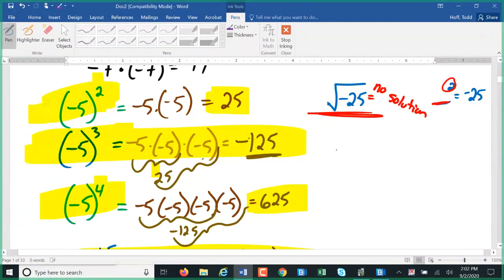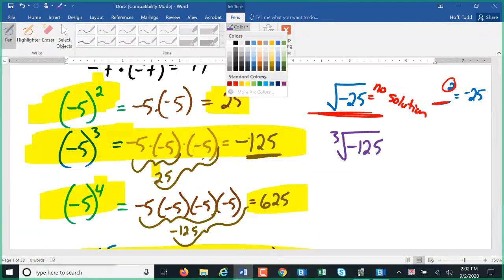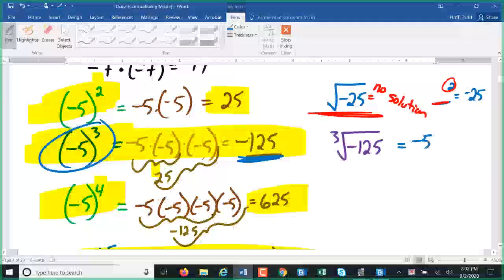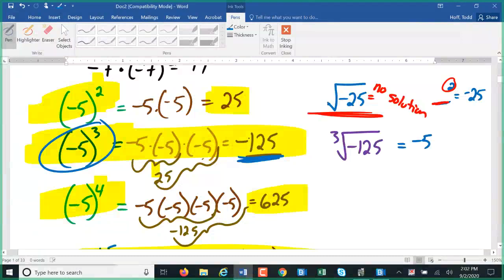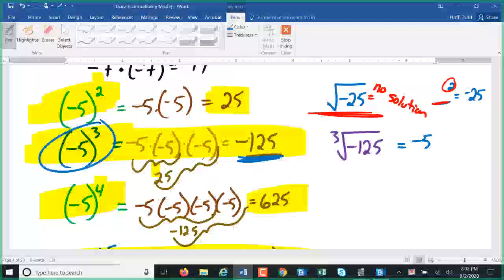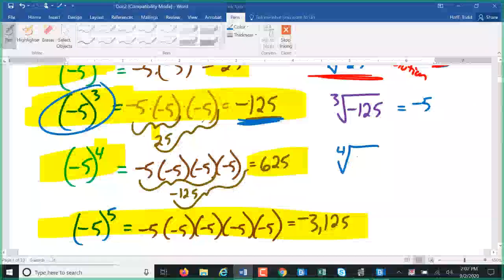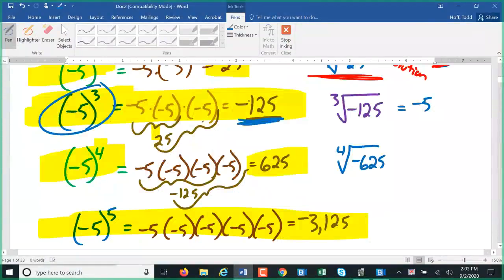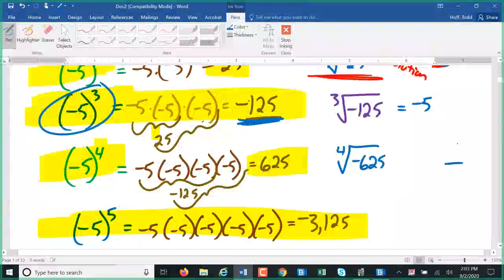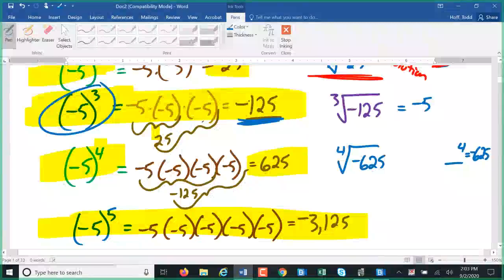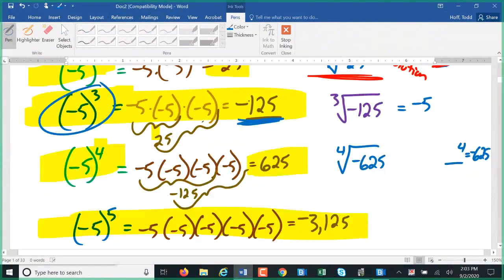So we might have the third root of a negative 125. Well, we just saw here that negative 5 to the third power is a negative 125. So that just very simply becomes negative 5. That's the definition of that third root is reversing the third power. If I want to do a fourth root of a negative 625, well, again, that's asking what number to the fourth power equals a negative 625. Well, the 4 is an even power. Anything to an even power is positive. So there is nothing we can put in there. That's going to have no solution.